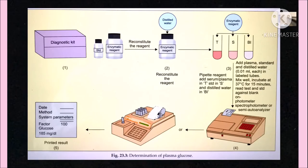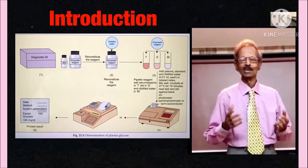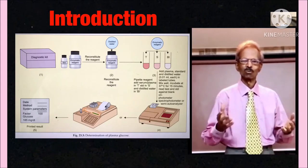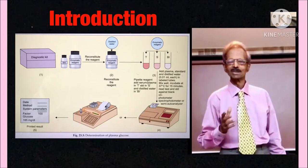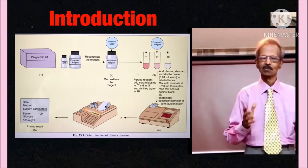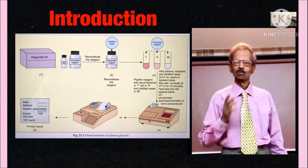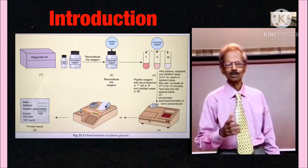As an example, see this figure of plasma glucose test in this type of end-point reaction method. Components in glucose reagent react with glucose in plasma and standard, and pink color forms. By measuring color density on a photometer, it is possible to determine plasma glucose concentration. Like this test, it is possible to determine various plasma components like urea, creatinine, proteins, cholesterol, triglycerides, various enzymes and some electrolytes.